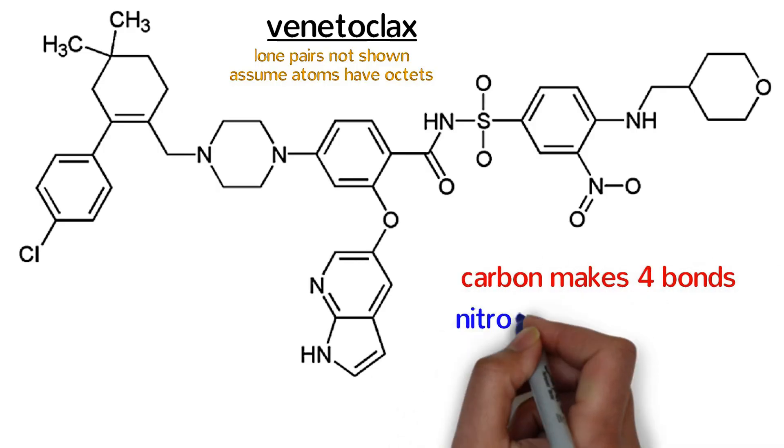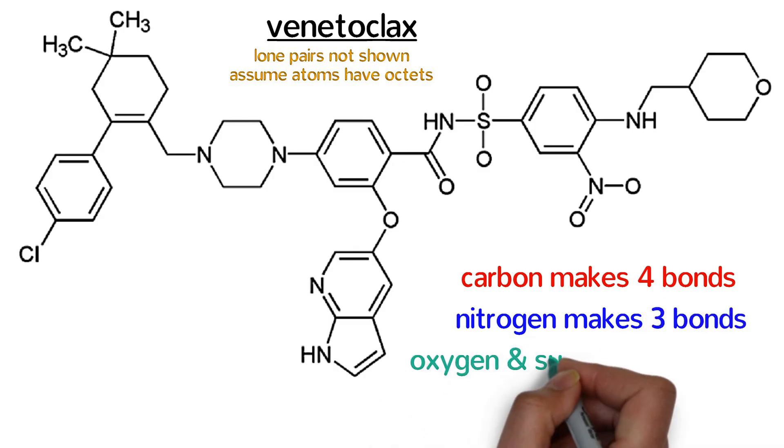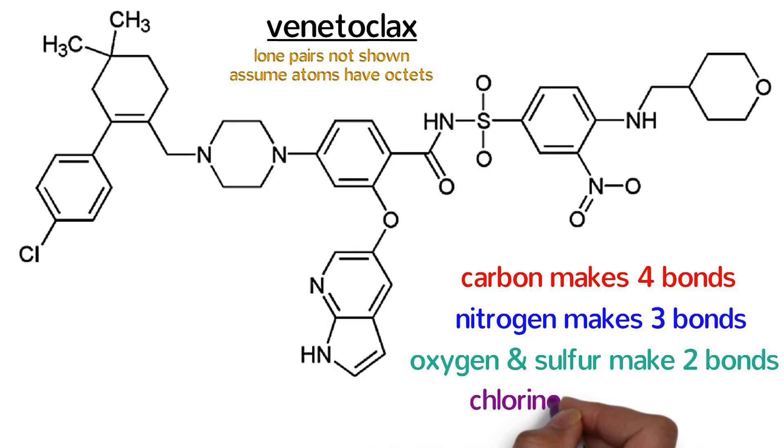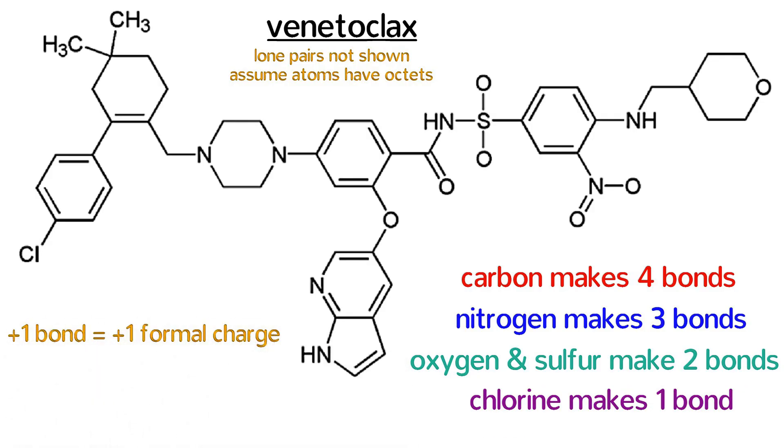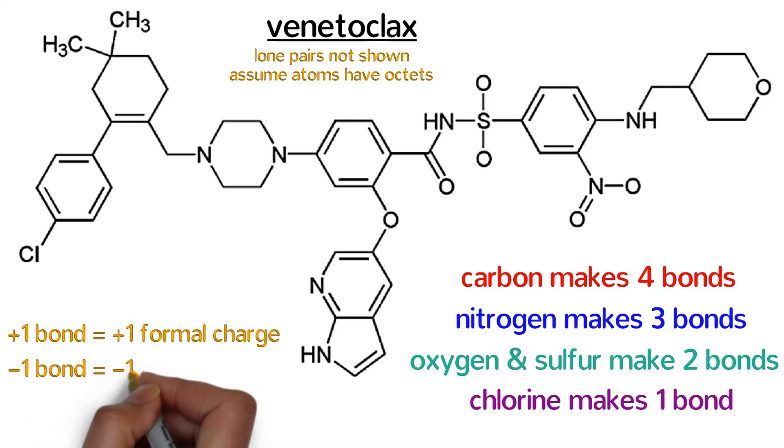Carbon typically makes four bonds, nitrogen makes three bonds, oxygen and sulfur make two bonds, and chlorine makes one bond. If an atom has an extra bond, it will have a positive charge, and if an atom has fewer than normal bonds, it will have a negative charge. The magnitude of the charge is equal to the number of extra or fewer bonds it has.